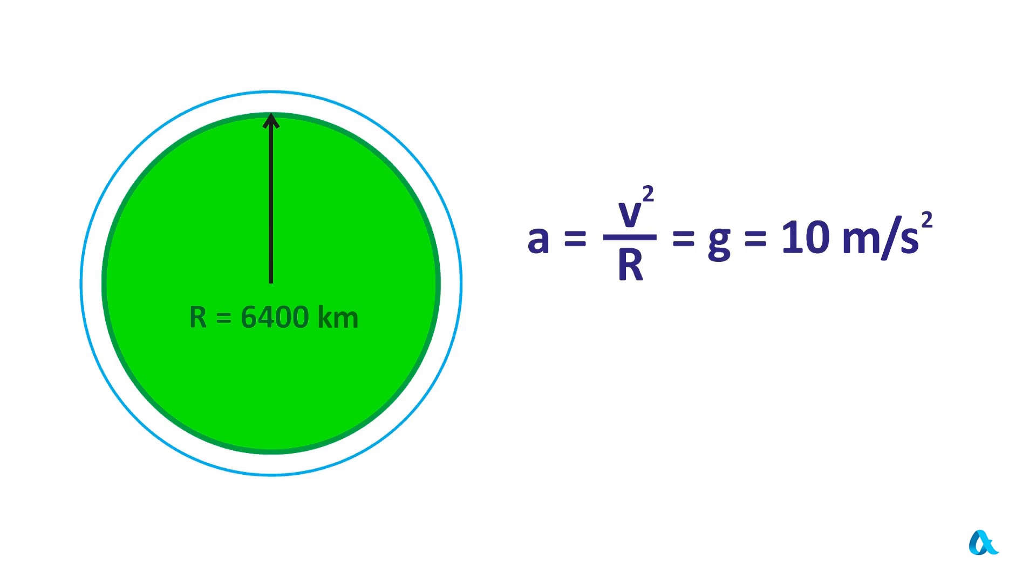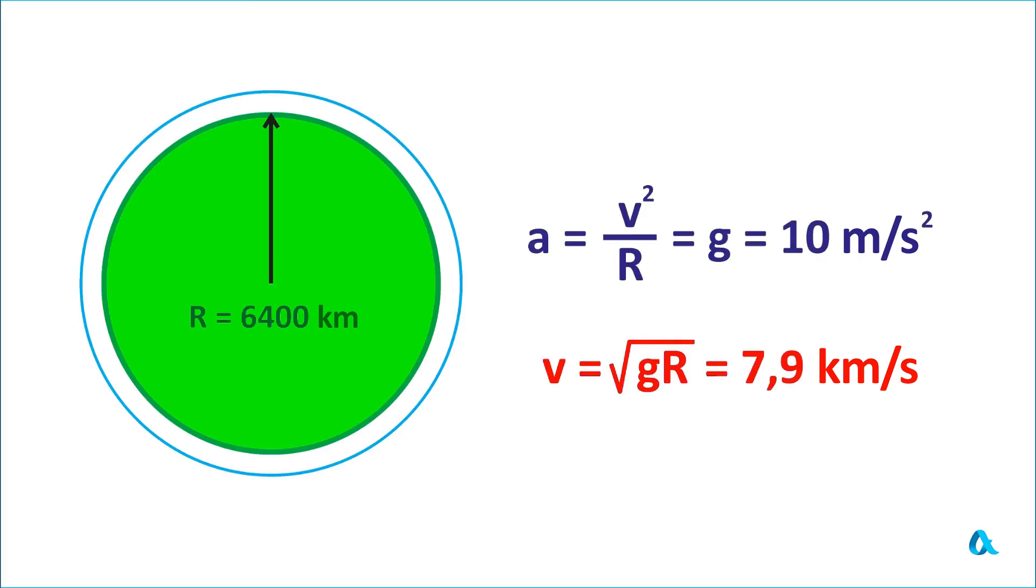Thus, the value of the first cosmic velocity is equal to the square root of gR, which is 7.9 km per second. And now you will definitely be able to explain why a satellite does not fall to the Earth while constantly falling towards it.